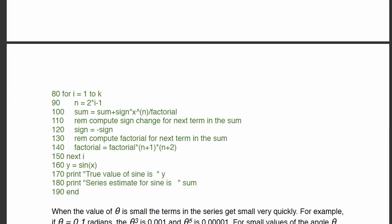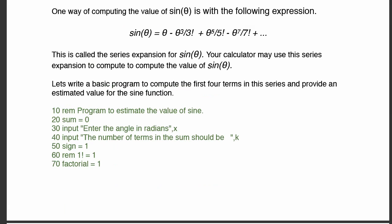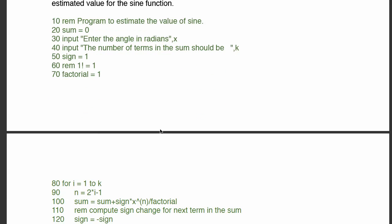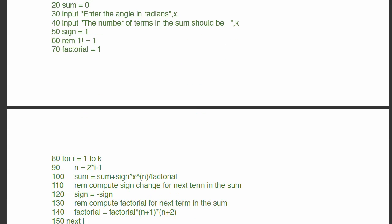Now we execute the sum with a for loop. We have the value of k, which tells us how many terms to include. For i equal one to k — where k could be one, two, three, and so on — we set n equal to two times i minus one. When i equals one, n equals one; when i equals two, n equals three; when i equals three, n equals five. So n keeps track of those odd numbers, which are the exponents in the series terms.